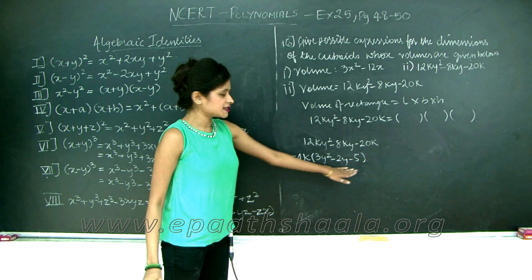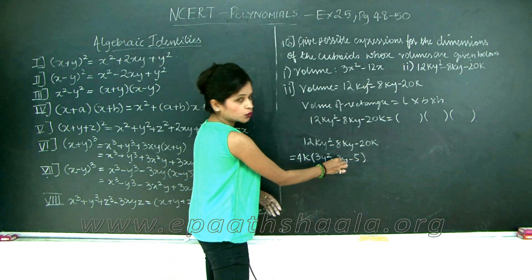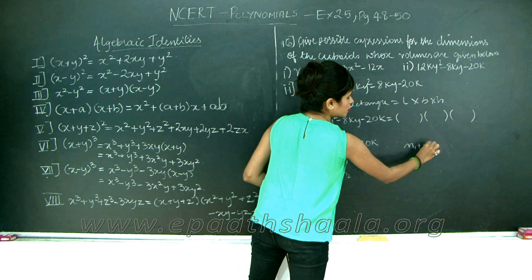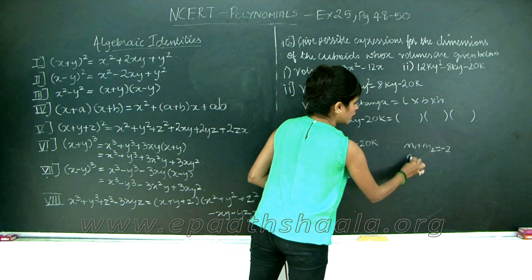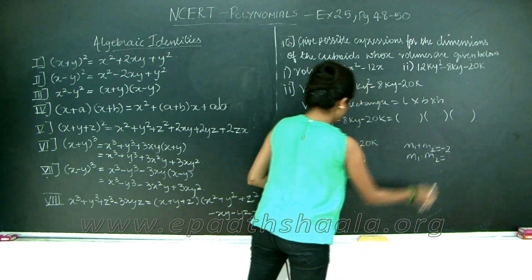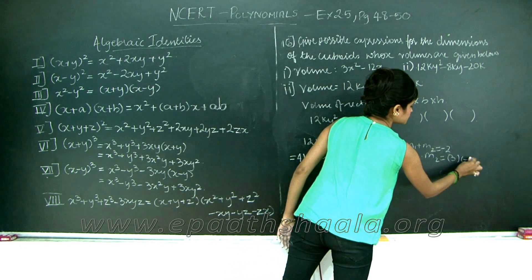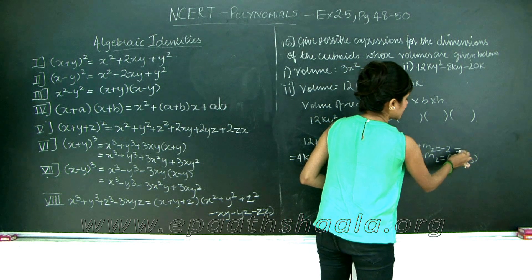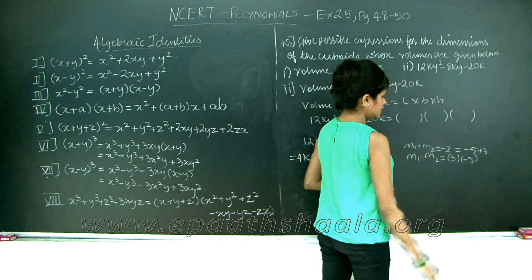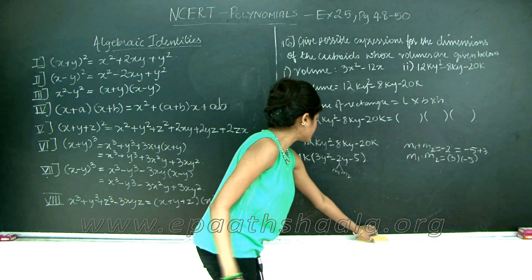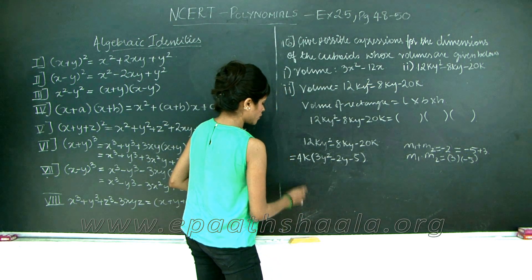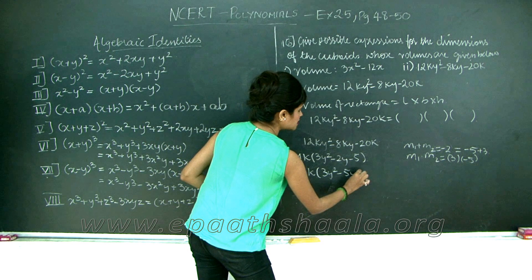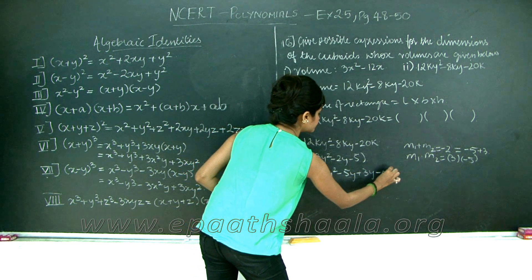Now we can go ahead and factorize this polynomial by splitting the middle term. I need to split my minus 2 into two terms M1 and M2 such that M1 plus M2 gives me minus 2 and M1 into M2 gives me 3 into minus 5. You see that minus 2 can be written as minus 5 plus 3. So let's say I am going to rewrite my quadratic equation as 4k stays as it is. I have 3y square minus 5y plus 3y minus 5.